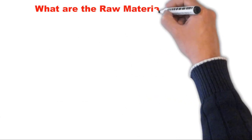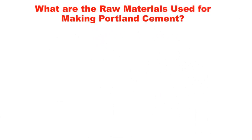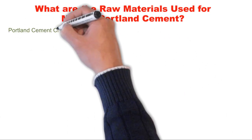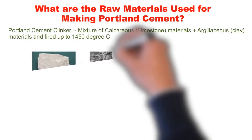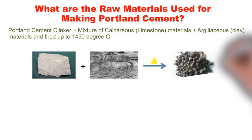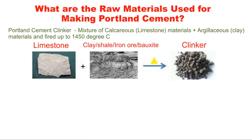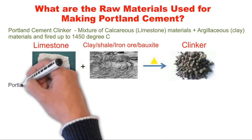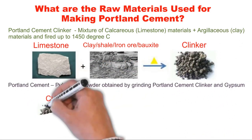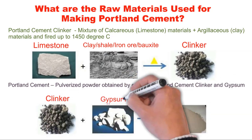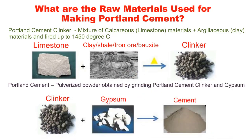The limestone and clay are suitably proportioned and ground to a very fine powder stage, then heated at 1400 degrees Celsius in the rotary kiln to obtain Portland cement clinker. This clinker, after it cools down, is ground along with gypsum to produce cement. The final dry gray powder obtained is called Portland cement.